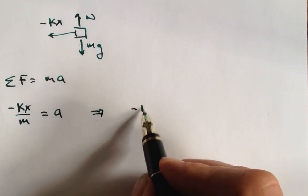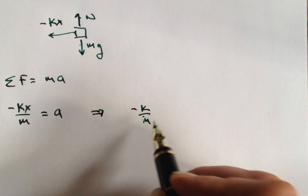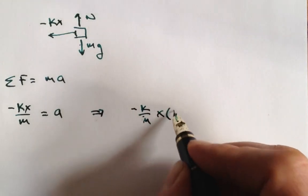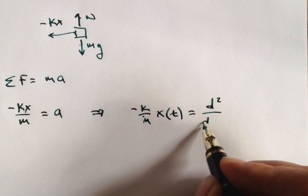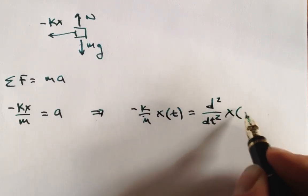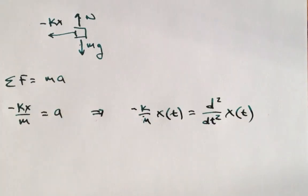If we express acceleration as the second derivative of position, we get this differential equation, an equation that says, whatever our position function x(t) is, it should have the characteristic that if we twice differentiate x with respect to time, we should get our original function back again, but with a negative k over m out front.